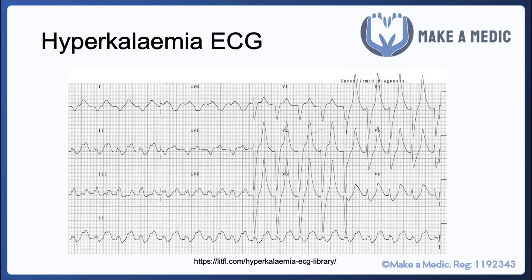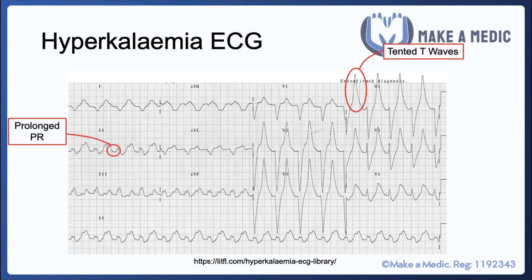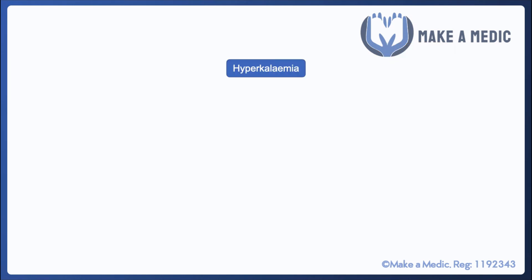ECGs are very important because the main complication of both hyperkalemia and hypokalemia is that they can affect electrical conduction within the heart and give rise to ventricular arrhythmias. Typical ECG findings in hyperkalemia include a prolonged PR interval, tented T waves, and broad QRS complexes.